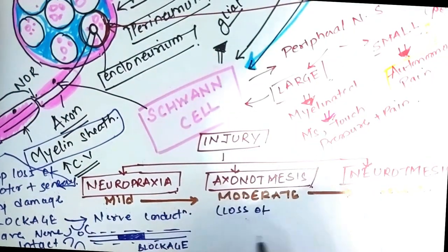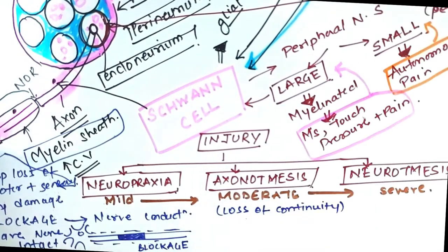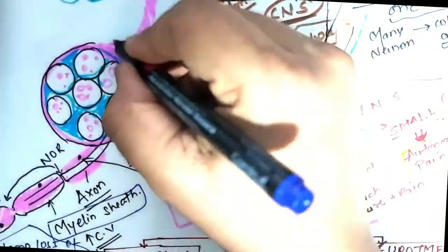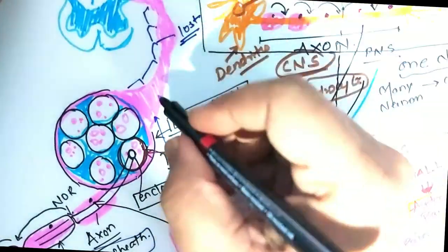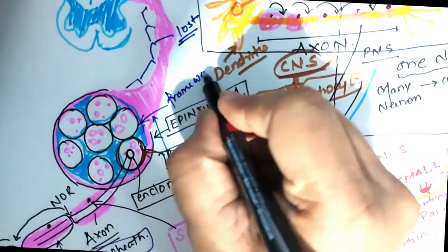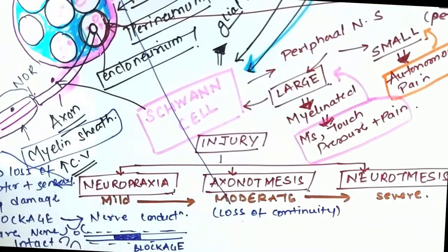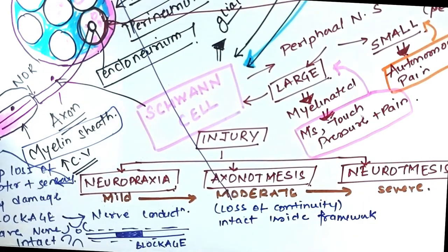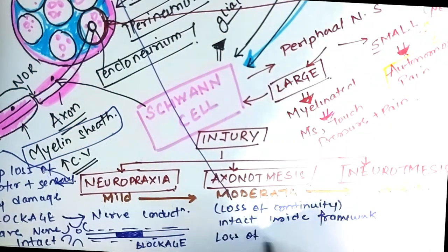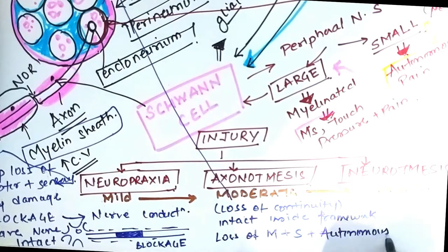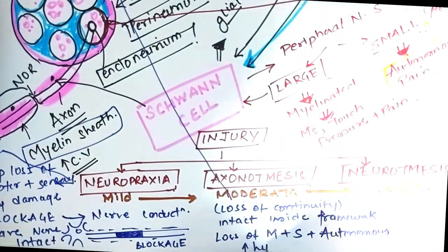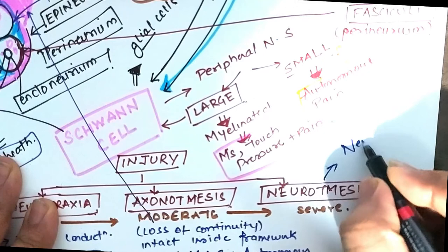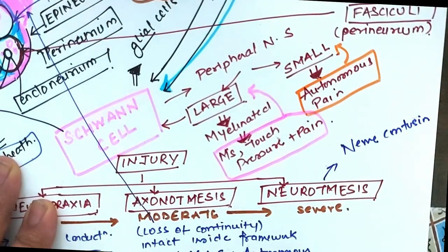However, there is no structural damage in neuropraxia, whereas in axonotmesis you will see that the outermost layer of the axon, that is the endoneurium, gets disrupted. So major internal frameworks remain intact, however the layer surrounding the axon, the endoneurium, gets damaged here because of which there is a loss of motor plus sensory plus some autonomic function. Now this hypersensitivity is due to the large release of acetylcholine at the neurotransmitter.